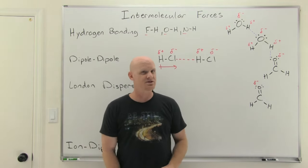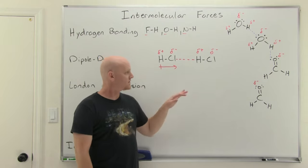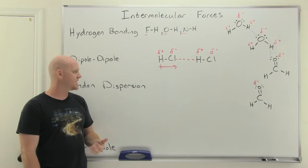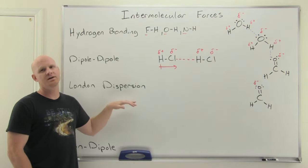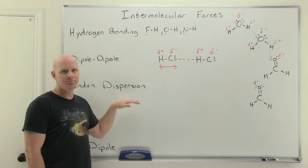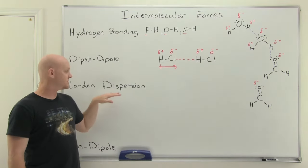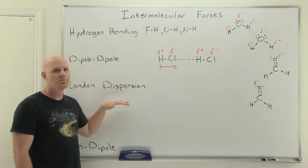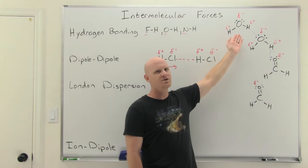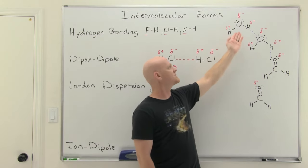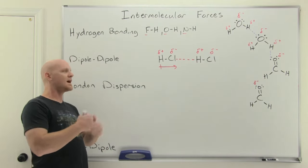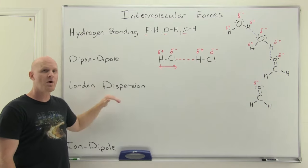Last but not least among these three is London dispersion forces, generally regarded as the weakest. They're a weak, temporary or transient dipole. These are easiest to see in non-polar molecules, because for a non-polar molecule, that's all it's got. But London dispersion forces are present in all molecules — water has them, HCl has them, formaldehyde has them. We just normally wouldn't talk about it with water because if you've got superglue, you don't talk about scotch tape — the superglue being hydrogen bonding, the scotch tape being London dispersion forces.